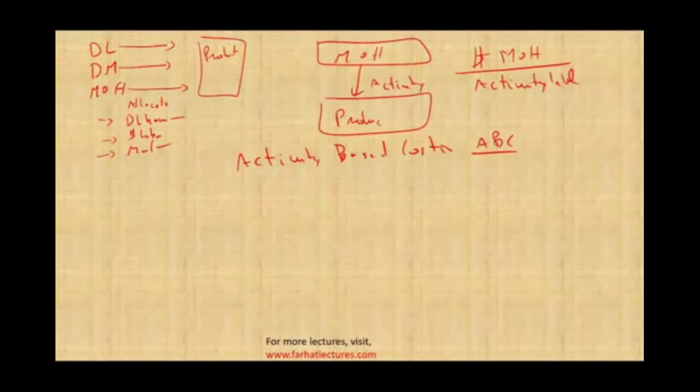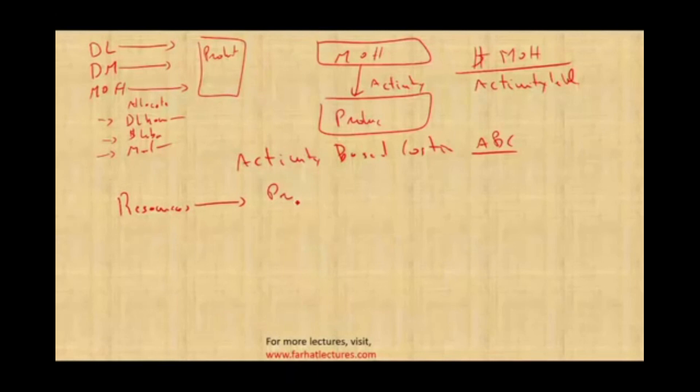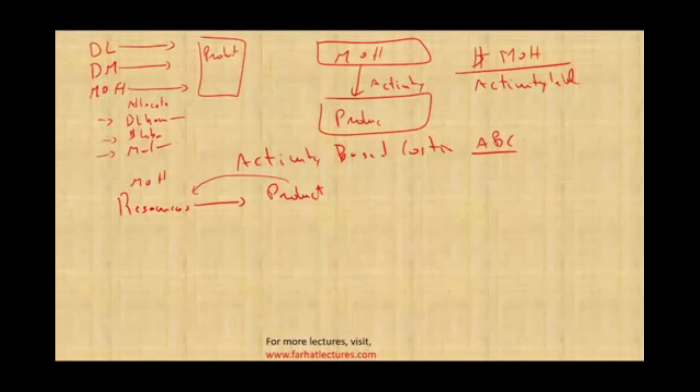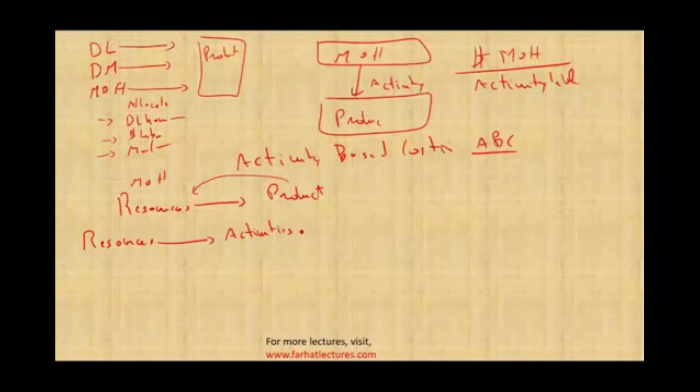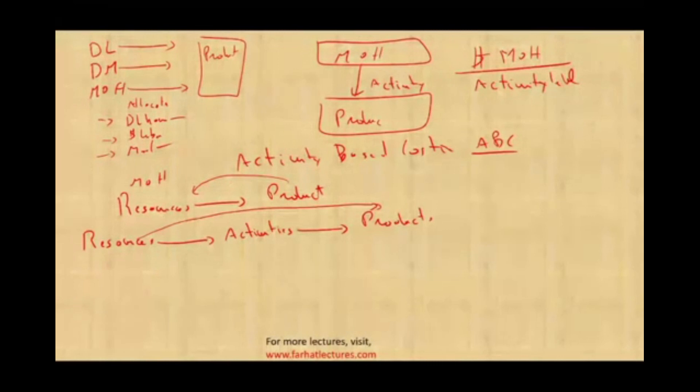Here's what ABC disagrees with the prior model. The prior model said resources — which is overhead — are consumed directly by the product. ABC looks at this from a different view. It says we do spend resources, and what consumes those resources are activities. Then the product consumes those activities. So resources flow into activities, and activities flow into the product.